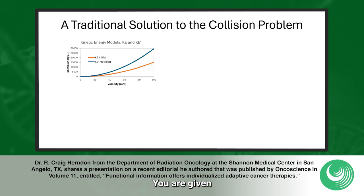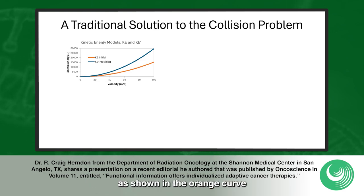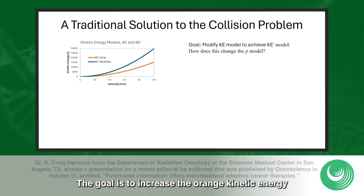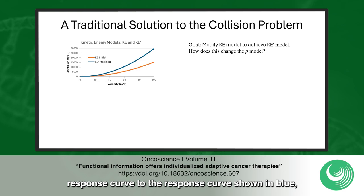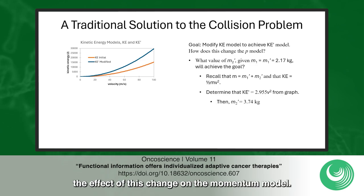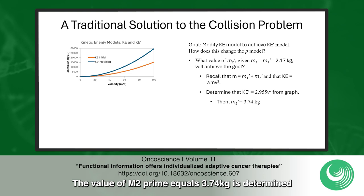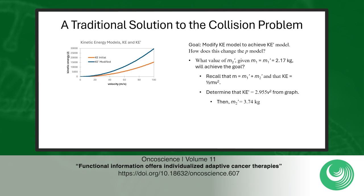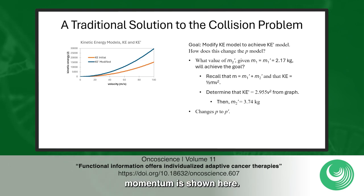Here's the problem. You are given the kinetic energy response data to the inelastic collision, as shown in the orange curve plotted in the kinetic energy graph. The goal is to increase the orange kinetic energy response curve to the response curve shown in blue, and determine the effect of this change on the momentum model. The value of m2' equals 3.74 kg is determined using the mass and curve fit data shown here. The resulting impact on momentum is shown here.